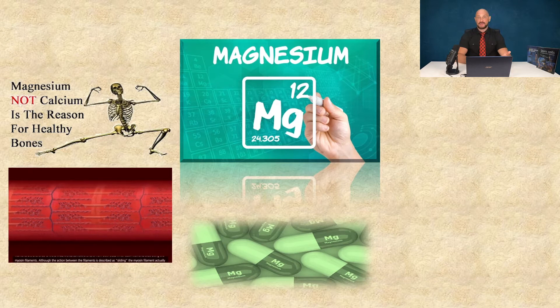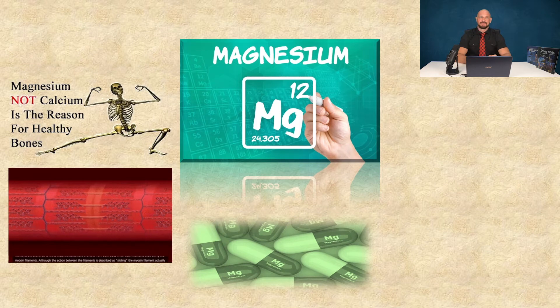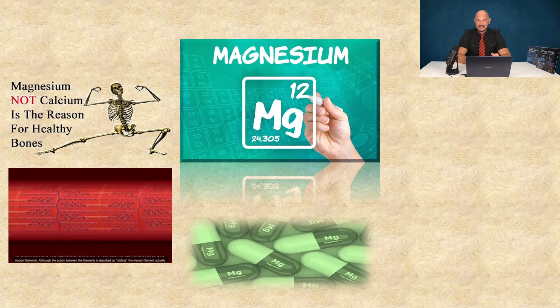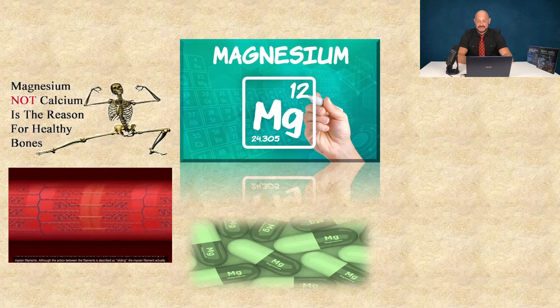It's essential for bone composition and hence the strength. Rest is mainly distributed in muscles and soft tissues. In the muscle tissue, magnesium is essential for muscle contraction and relaxation.